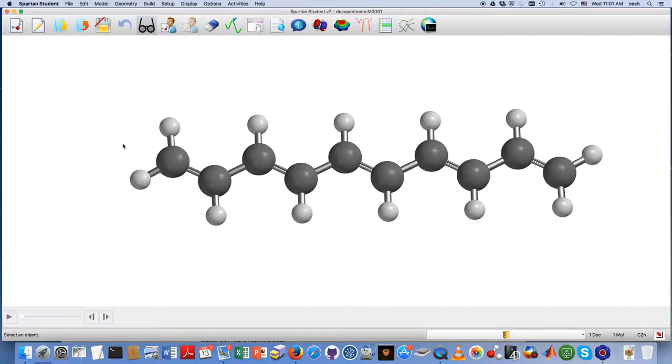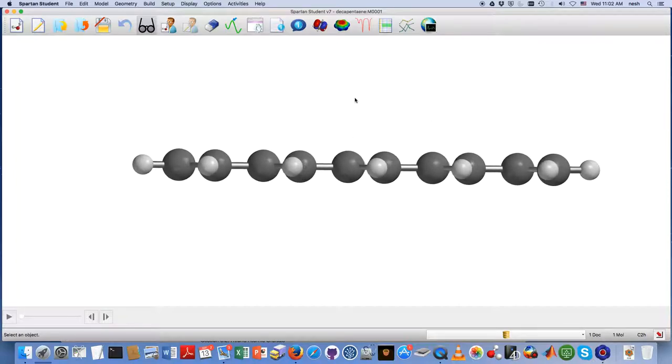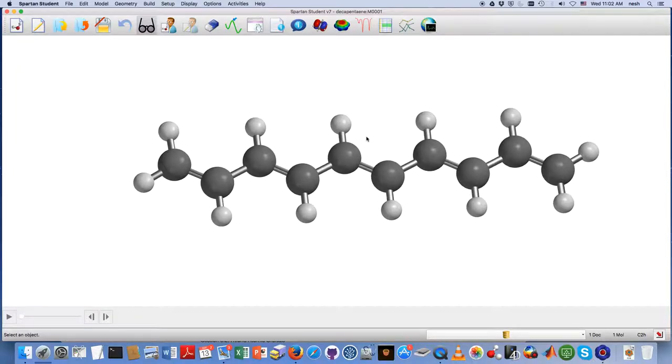We have a hydrocarbon here with a bunch of carbon-carbon double bonds. It's actually called decapentaene, and what I want to show you first is you can see how it's a planar molecule—it's all flat like this.